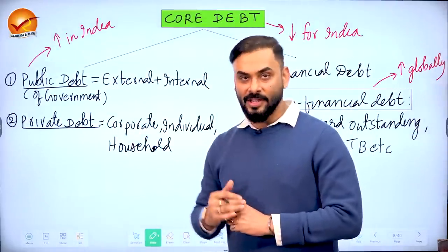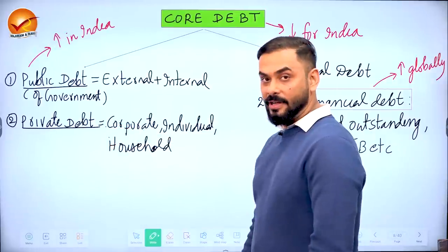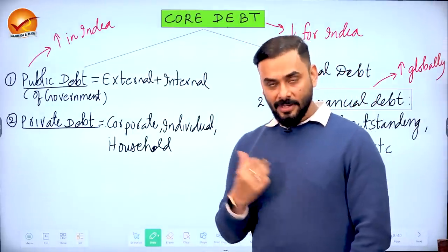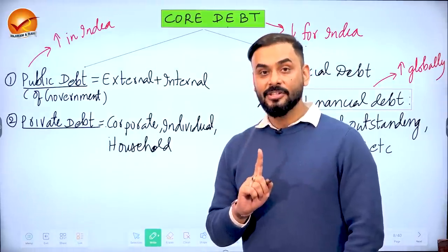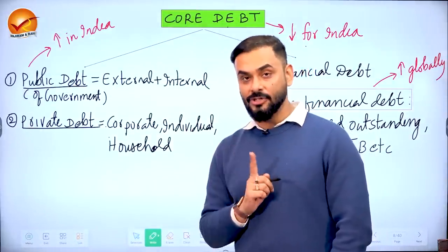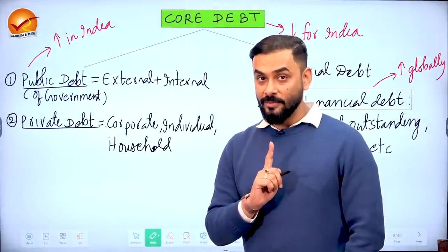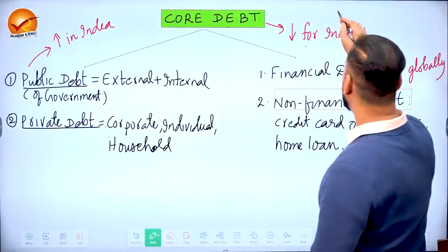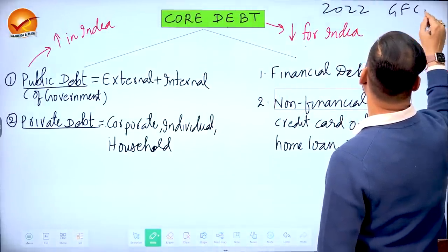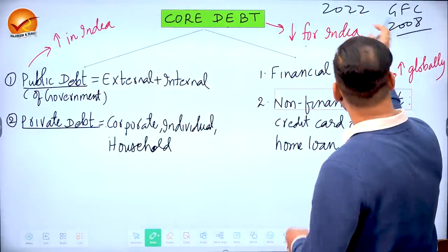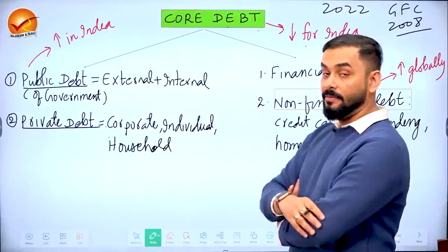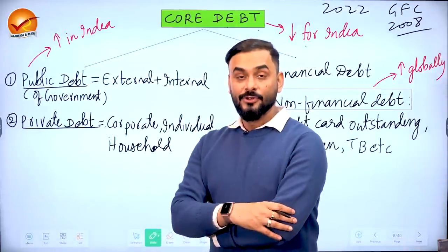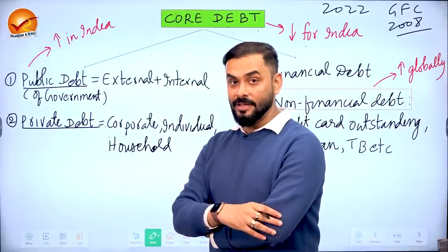In India, total debt has come down overall. The Economic Survey compares India's debt level today with the Global Financial Crisis of 2008. Compared to 2022 versus 2008, India's debt is 7% lower. Government debt has increased compared to GFC levels, but private debt has come down. Overall, our debt position is manageable.